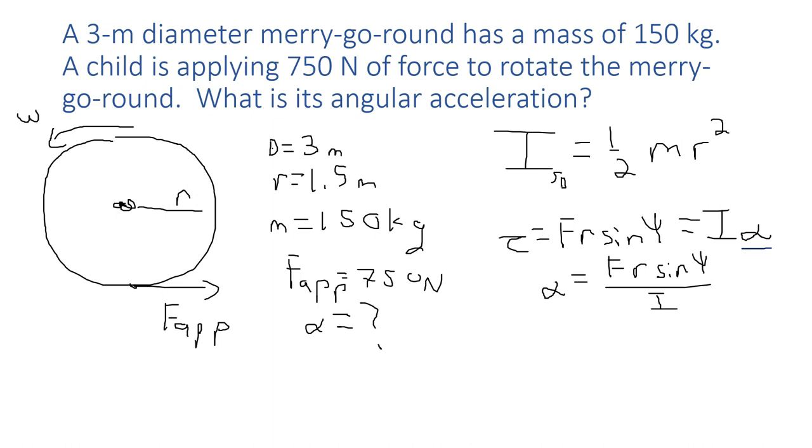Which we know from above, so we can substitute it. I'm going to go ahead and substitute and simplify, so we get 2 times force times lever arm times sine of the angle between them divided by mass of the merry-go-round times radius squared of the merry-go-round.